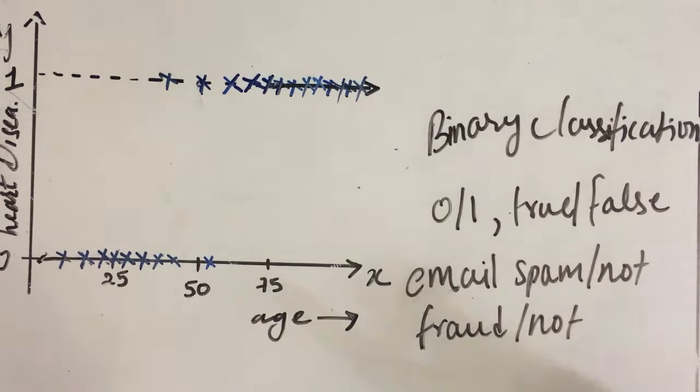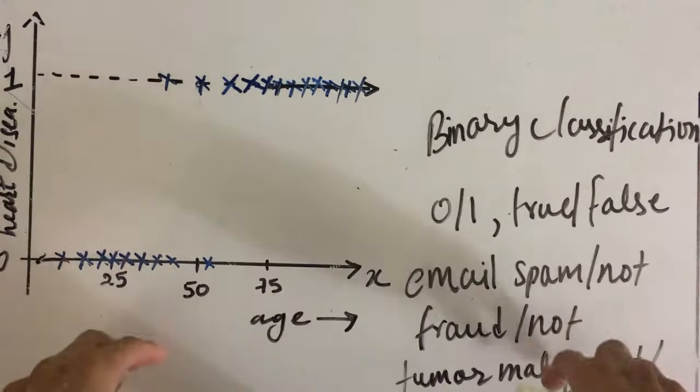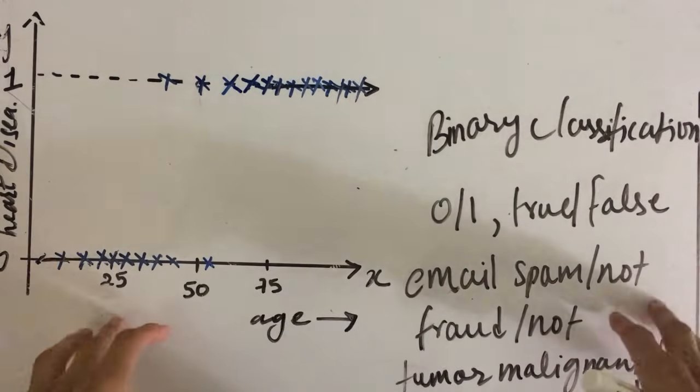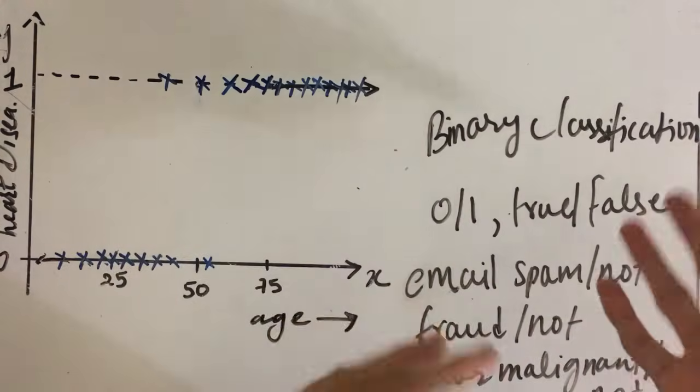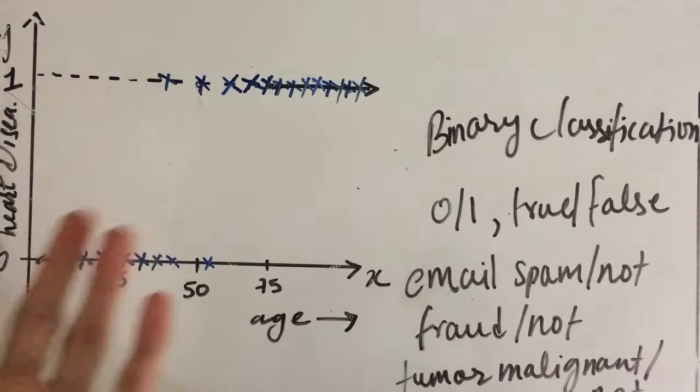Or it can also be to find out if the person is having a disease or not, or to find out if the tumor is malignant or not. So you can see that logistic regression is used when our output prediction can take either of the values, means either this value or that value.